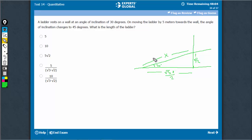Now, on moving 5 meters towards the wall, when it becomes 5, this angle becomes approximately 45 degrees.